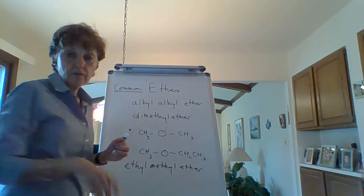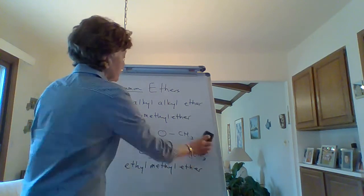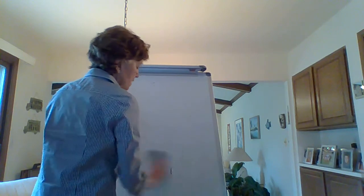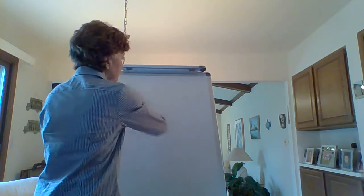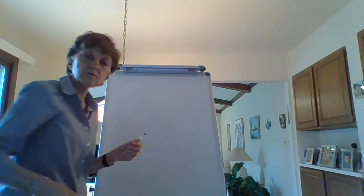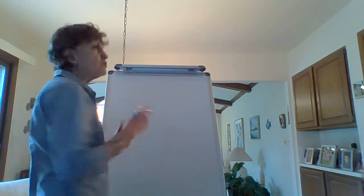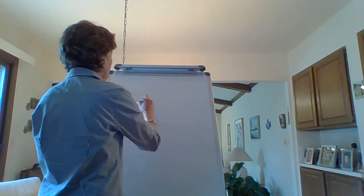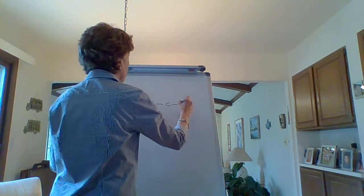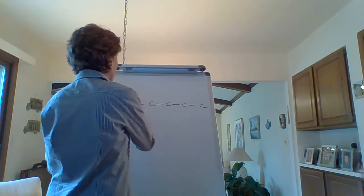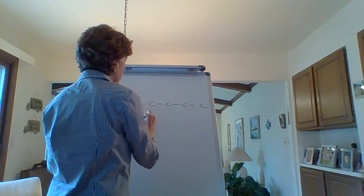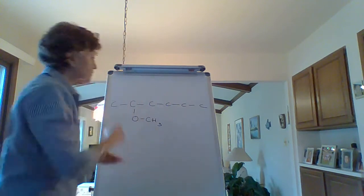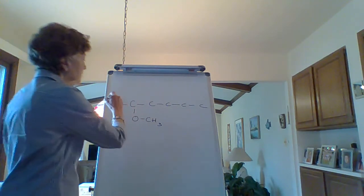Now I'll teach you the IUPAC naming. With IUPAC naming of ethers, you name them like they're alkanes, and then the ether group becomes a substituent. You usually use that when you get longer ethers.